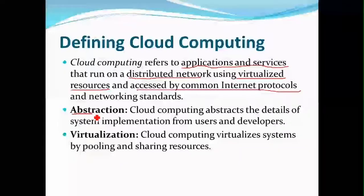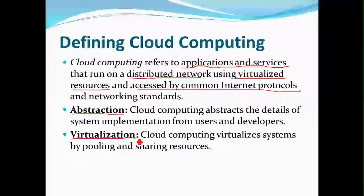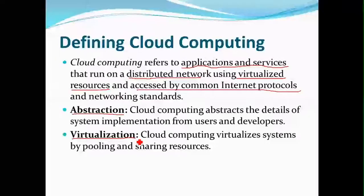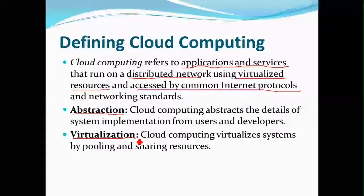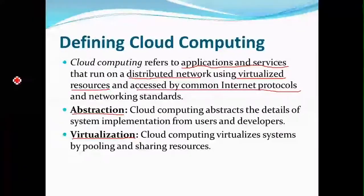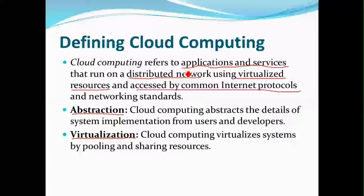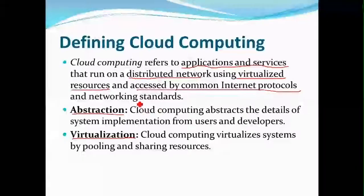The two things are: first, abstraction, and second, virtualization. These are the two terminologies within cloud computing. Abstraction means we are going to hide something — specifically the implementation. How the application or services are implemented will be hidden from the end user, so the end user will be able to use only the services, but how exactly those services or applications are implemented will not be revealed through cloud computing. This is the terminology we call abstraction.